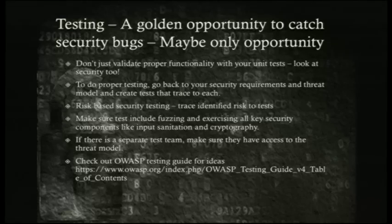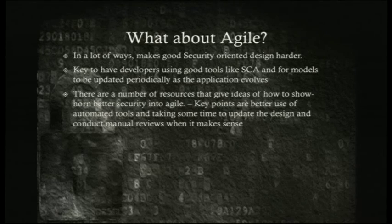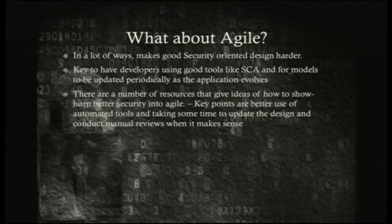Testing is a golden opportunity. If you don't do it anywhere else, you've got to try to catch it there. Have security-oriented tests as part of your unit tests. Do fuzz testing when you can. If there's a separate test team, make sure they know the threat model and have access to all documentation. Check out the OWASP testing guides. As for Agile: it makes things a little harder, but you still need to shoehorn security in — whether during major design reviews or any final release going out. There's a lot of research about how to fit this into Agile, so be sure to read that.